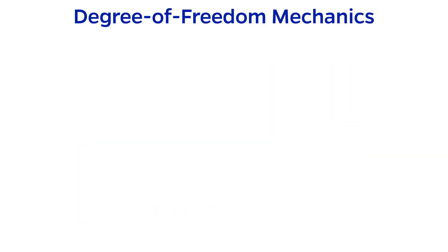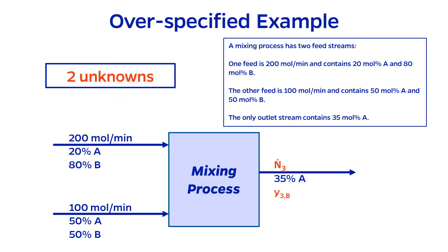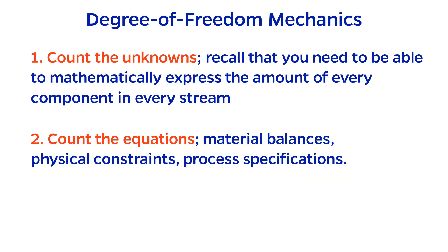Mechanics of performing the degree of freedom analysis. The first step is to count the unknowns. To do this, start with a fully labeled block flow diagram, recalling that you must be able to express the amount of any species in any stream, either with given information or with unknown variables. Back to my example from before, I have two unknowns, which are N3 and Y3b.